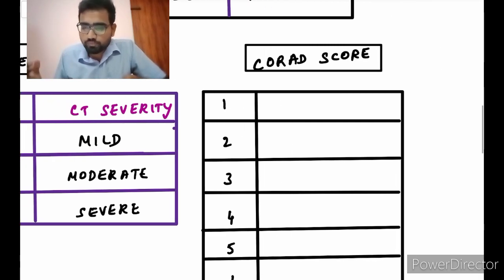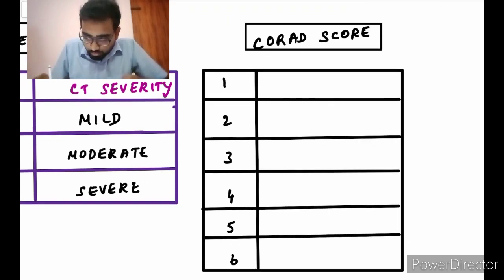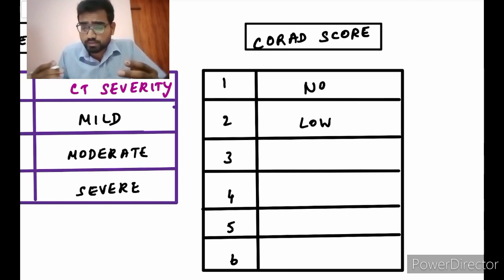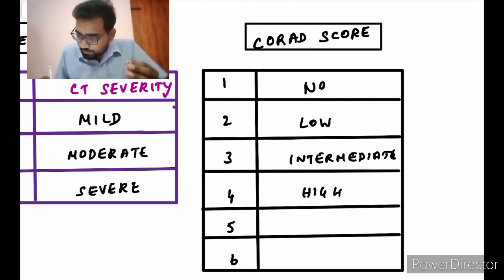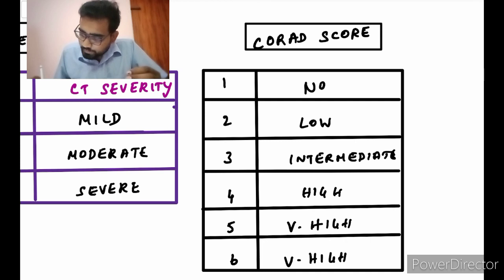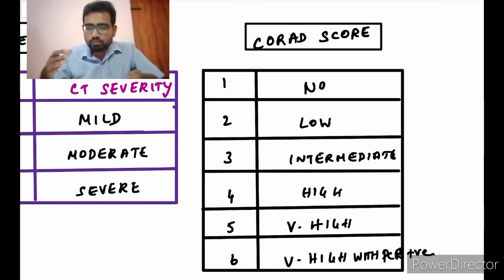If you look at the CO-RADS score, it represents the level of suspicion for COVID-19. There are 6 CO-RADS scores: CO-RADS 1 is no suspicion; CO-RADS 2 gives you low suspicion for COVID-19; 3 is intermediate; 4 is high; 5 is very high; and 6 is also very high but with PCR positive.